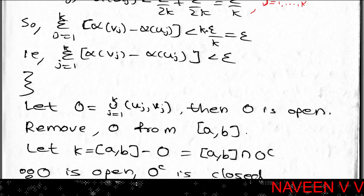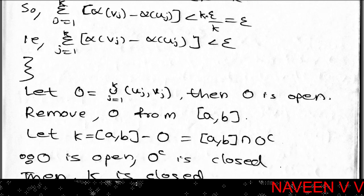So we can cover the set E by finitely many disjoint closed intervals [u_j, v_j] such that summation j=1 to k of (alpha(v_j) minus alpha(u_j)) is less than epsilon.